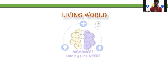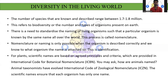Have concentration and be with us till the end of the video. The very first chapter is Living World. Coming to the Living World, the first thing they can ask you in NEET is about the total number of species described. The number of species that biologists know and have described presently normally ranges between 1.7 to 1.8 million species. This species diversity is referred to as biodiversity — the number of types of organisms present on earth.